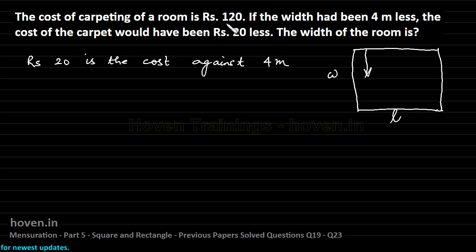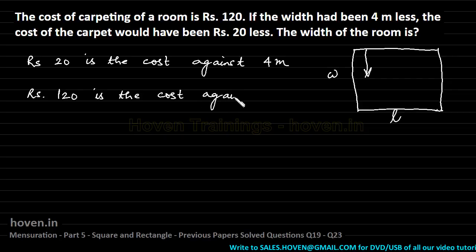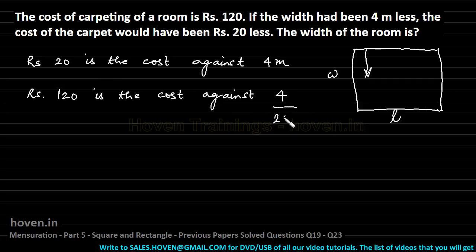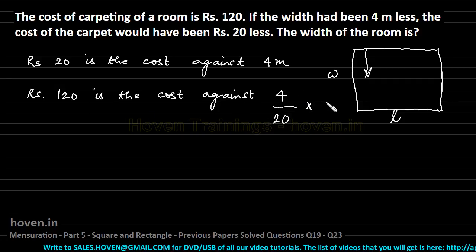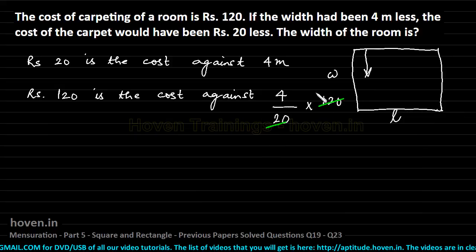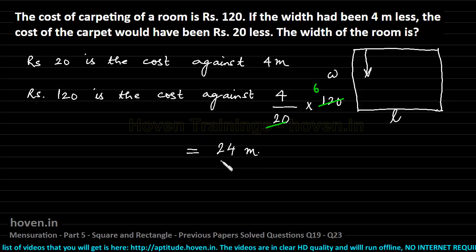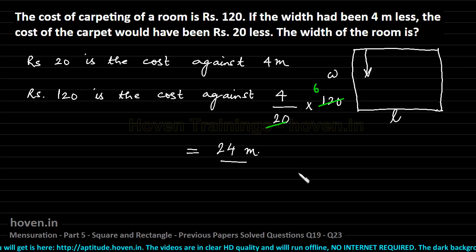And Rs 120 is the cost against how many meters? That will be the width. Using the unitary method, Rs 120 corresponds to (4 ÷ 20) × 120 = 24 meters. The answer is 24 meters. This was a simple question of visualization.